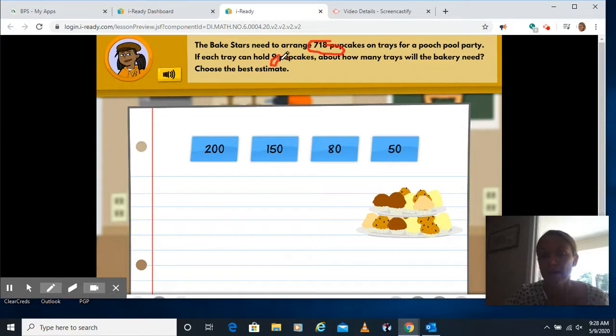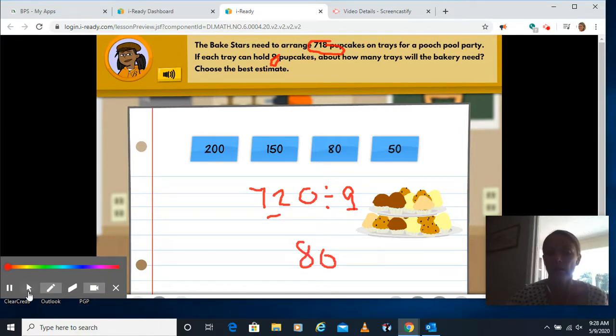So I know the multiples of nine. I know there's a multiple of nine, which is 72. 718 is really close to 720. And then if I divided that by nine, I know 72 divided by nine is eight. And then I can bring my zero for an estimate of 80.